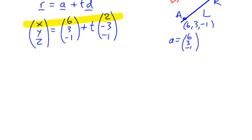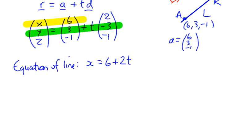So I'm going to write down the equation of the line. X equals 6 plus 2T. I'm going to write them underneath each other. The second equation involves the second row: Y equals 3 plus T times negative 3, so it's 3 minus 3T. And my third line involves these negative 1s: Z equals negative 1 minus T. So there we have the equation of the line in parametric form.